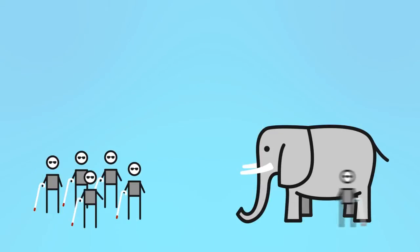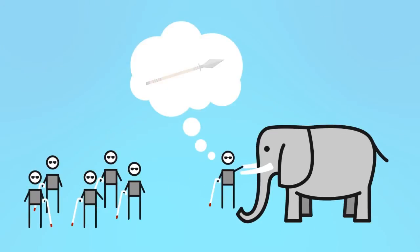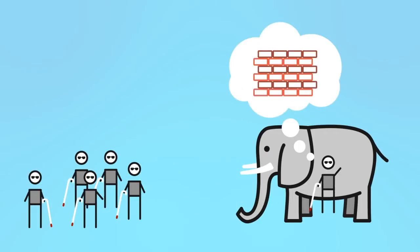The fourth, feeling the tail, thought it was like a rope. The fifth, touching the tusk, concluded it was like a spear. And the sixth, resting against the body, was convinced that it was like a wall.